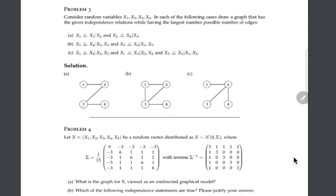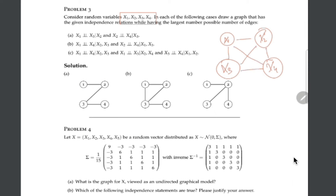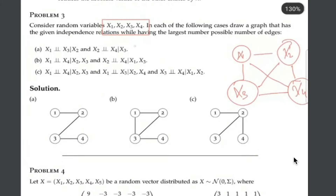Now let's go towards problem number 3. We are given conditional independence statements and need to draw the corresponding graphs. We have four different nodes: x1, x2, x3, and x4. We draw all possible combinations of paths. The first condition says that from x1 to x3, the only path is via x2. So if x2 does not exist, there should be no other path from x1 to x3.